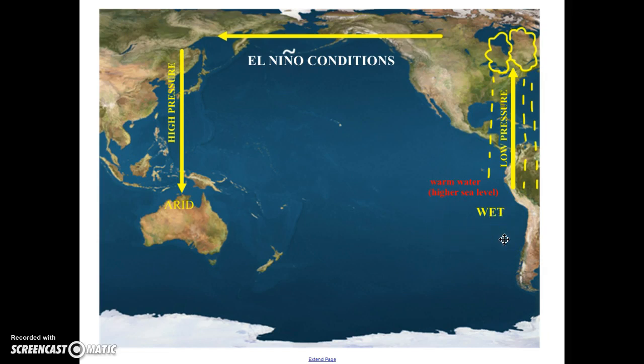El Nino itself is named for the Christ child. El Nino means 'the boy,' and the first N is capitalized, so it is a proper noun. It was named El Nino because the Peruvian fishermen noticed that the fishing would sometimes be bad around Christmas time, so they named it El Nino, or the Christ child, for when it happened.